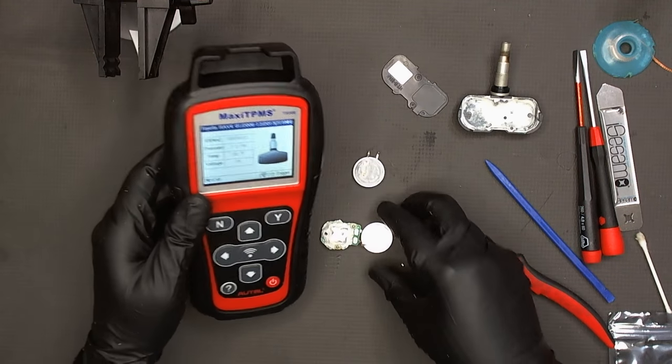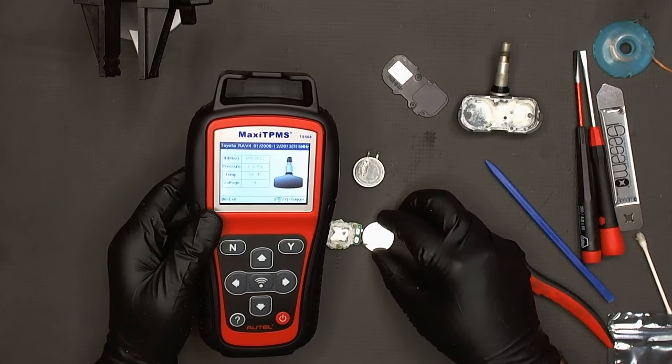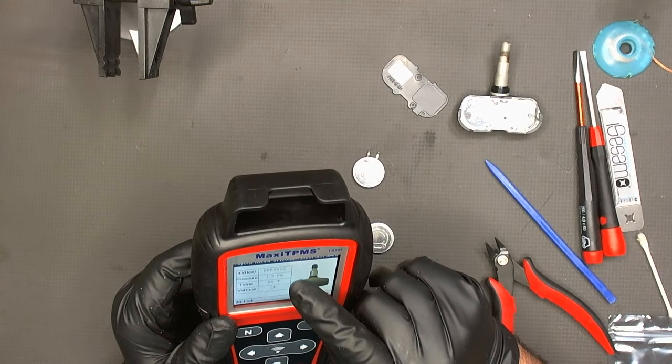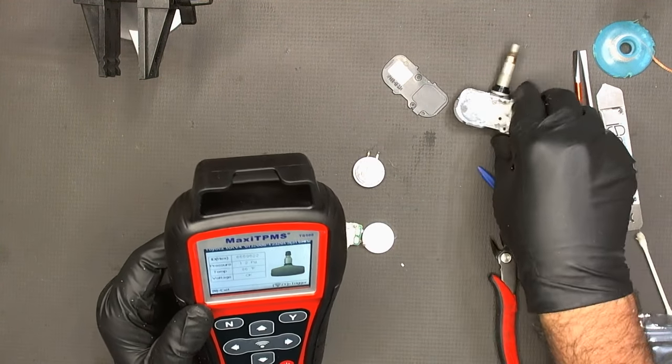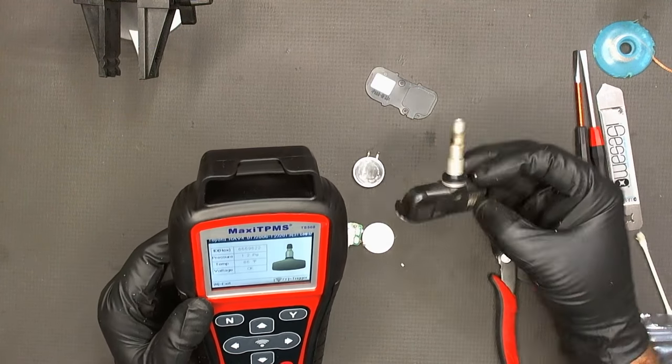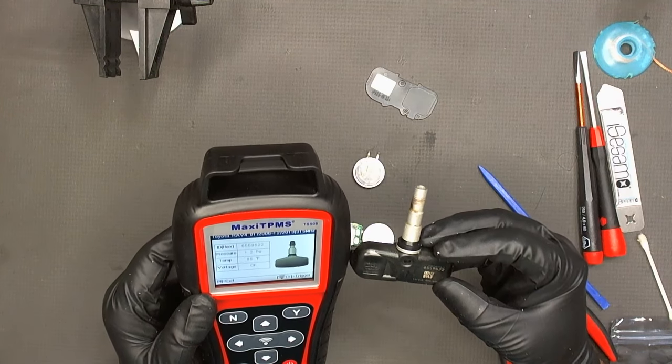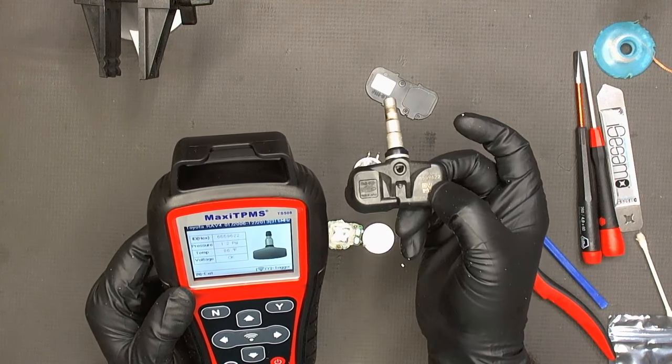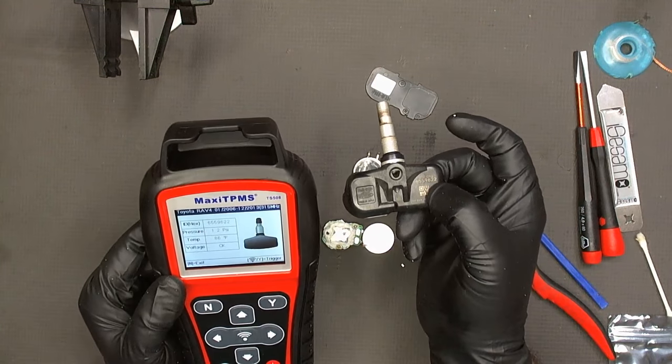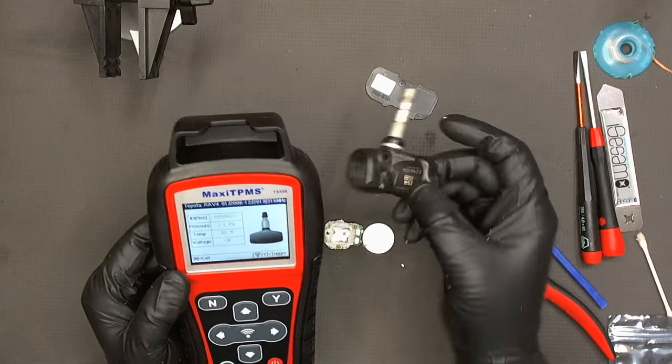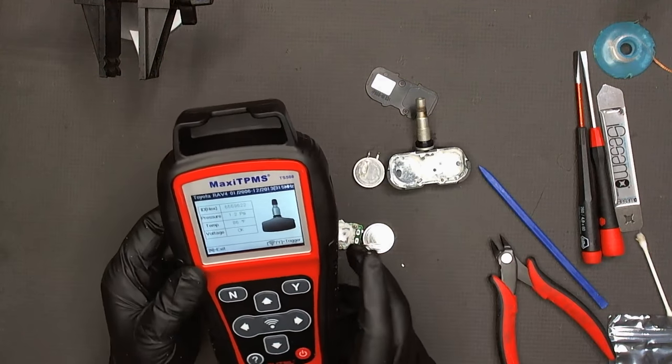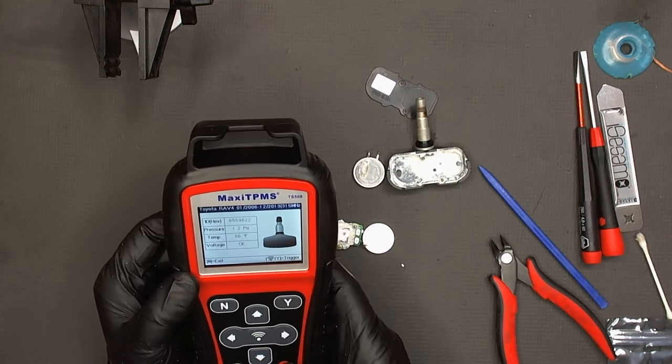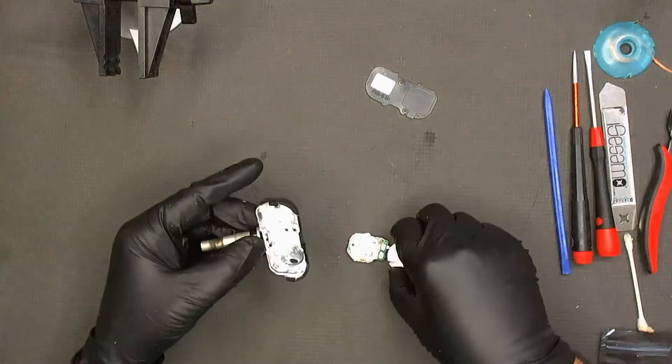And as you can see, it identified it. And the number that came up for this is 6559622. As you can see, it's written in here. It's also on the device. So this device is working fine. Now we need to put it all back together. Let's put this back in there.